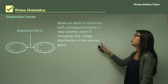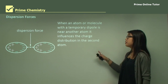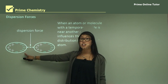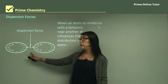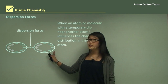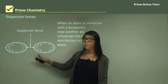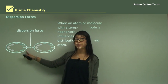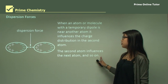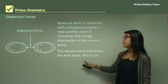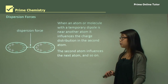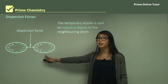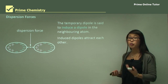When an atom or molecule with a temporary dipole is near another atom, it can influence that atom's charge distribution. A slight negative charge here repels slight negative charges on the adjacent side, pushing them over, leaving a slight positive charge on one end. So we get negatives and positives attracting each other, causing a dispersion force — a slight attraction. This keeps going through the whole state, meaning we have dispersion forces between all the molecules. A temporary dipole induces a dipole in the next one, and these attract to form dispersion forces.